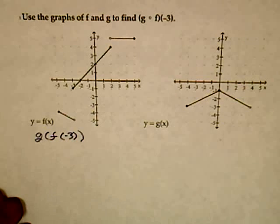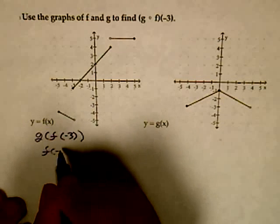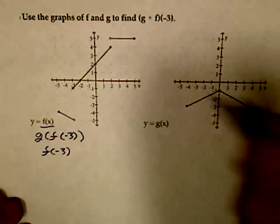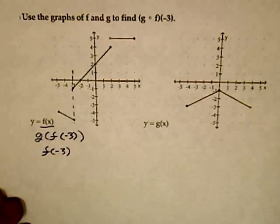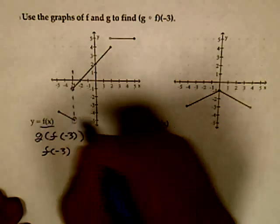Now, the first thing I'm going to do is find f of negative 3 from my first graph labeled f of x. I will go to negative 3, and I'm looking at where the graph is. This is a closed dot, and this is an open dot.